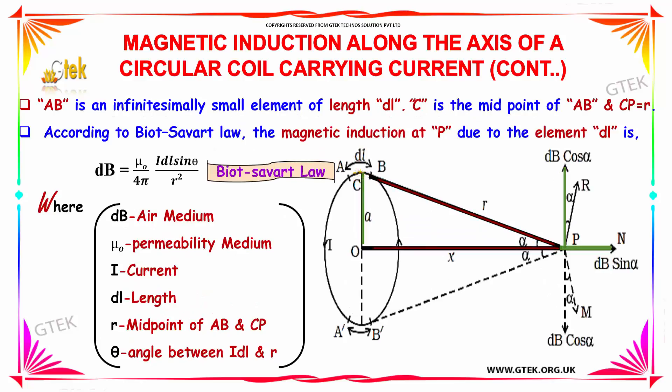AB is an infinitesimally small element of length dl. C is the midpoint of AB and CP is equal to R.